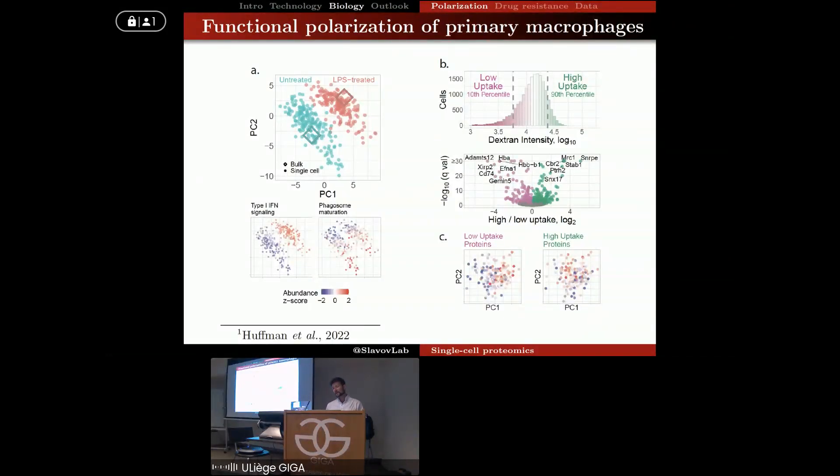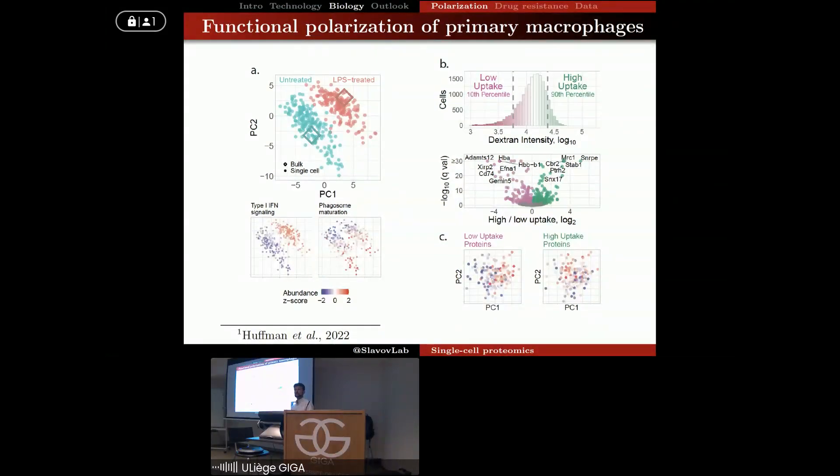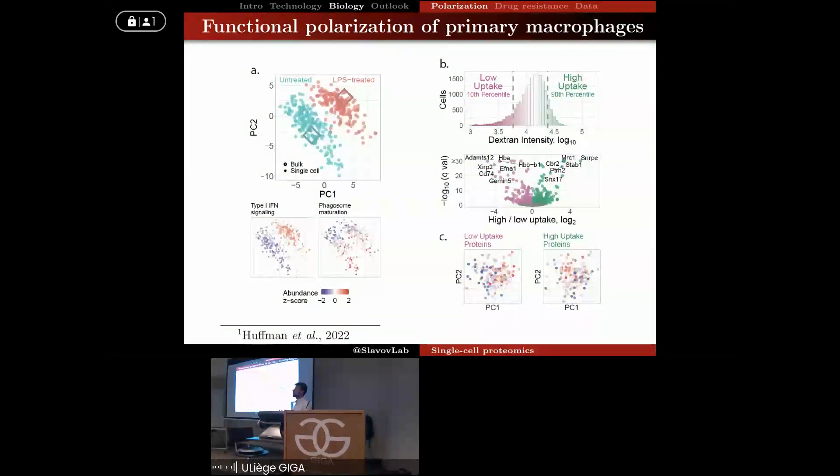And then we were able to take this protein signature and correlate it back to the PCA analysis and demonstrate that the single-cell variability that we originally observed in the mass spectrometry measurement in fact is associated with those functional differences of dextran uptake activity. And then having identified that indeed there are molecular and functional differences within these primary macrophages, we wanted to see if we can identify some of the regulatory mechanisms.